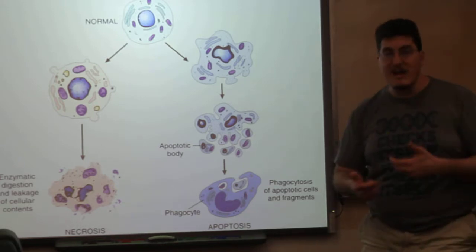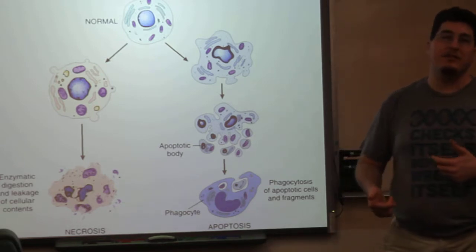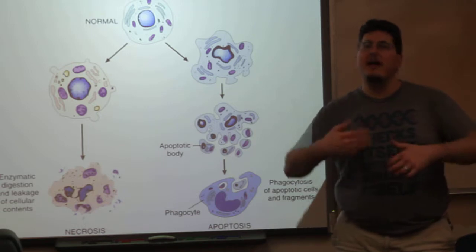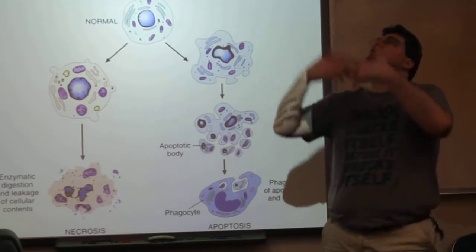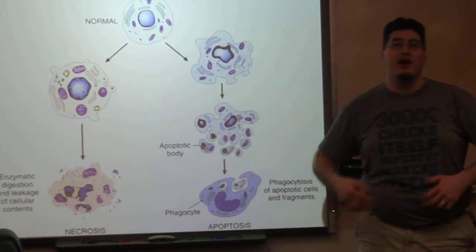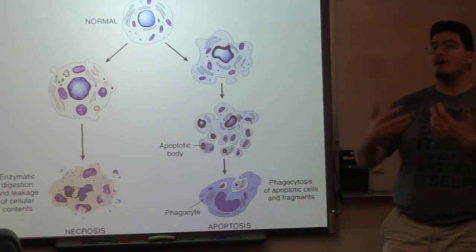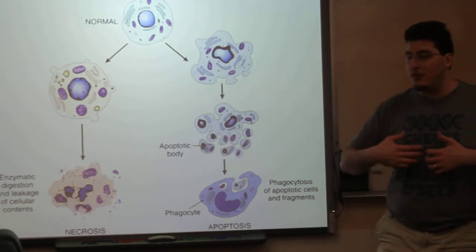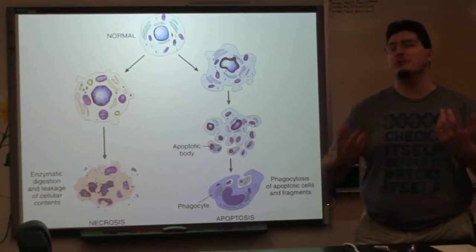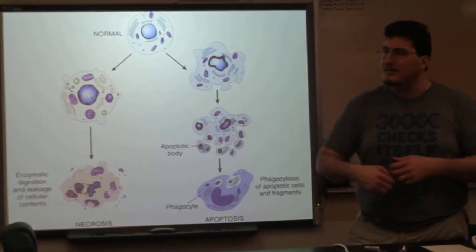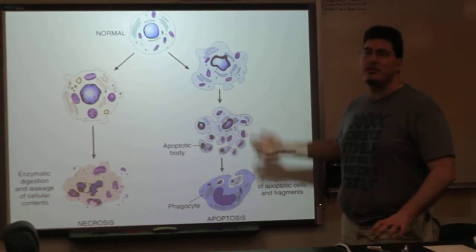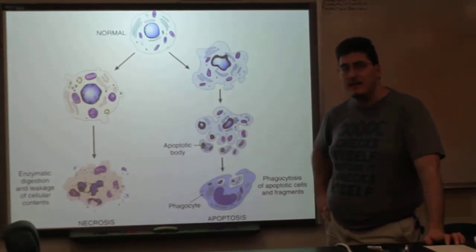Phagocytes like macrophages come along and engulf these apoptotic bodies and then digest those fragments. This is sort of like the cell sacrificing itself for the greater good and returning all of its organelles to the community for redigestion and redistribution — it's giving back, which is very philanthropic of this apoptotic cell.